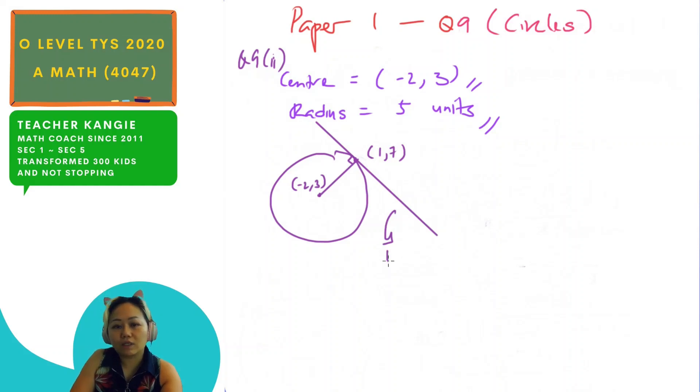So your task is to find equation of this line, which is y equals to mx plus c. So the first thing, you always have to find the gradient, right? So since I have the two points already, I can find the gradient. I shall label this as point C since it's center. I shall label this as point A. So I have to find gradient of AC.